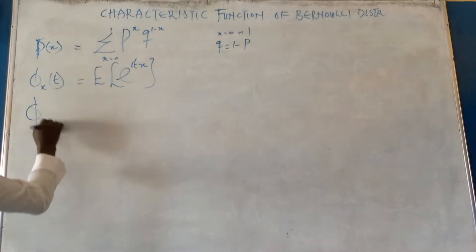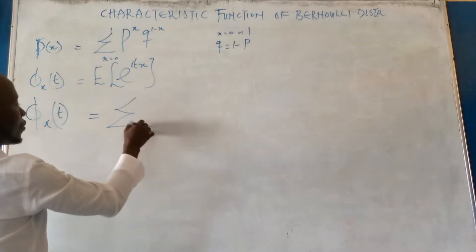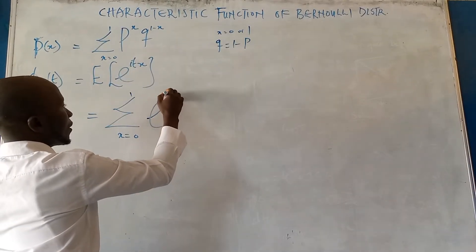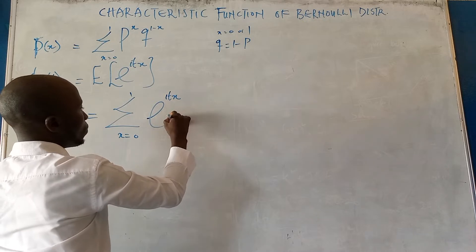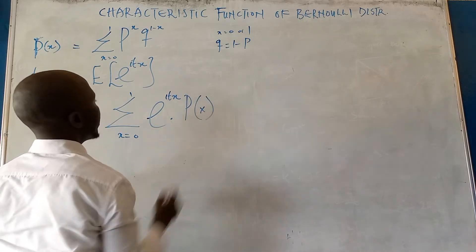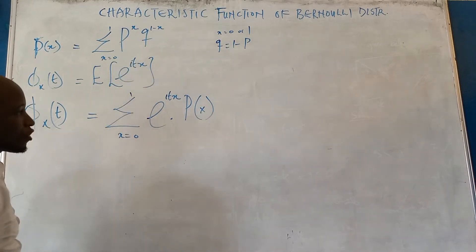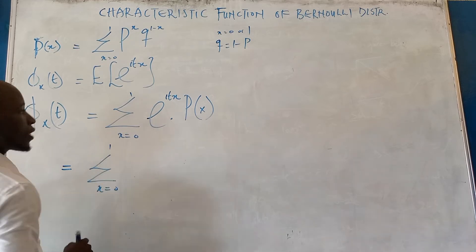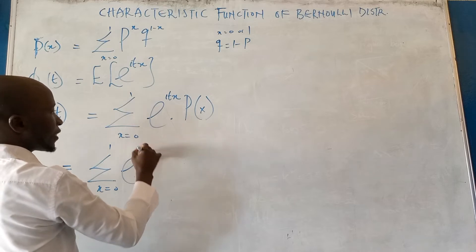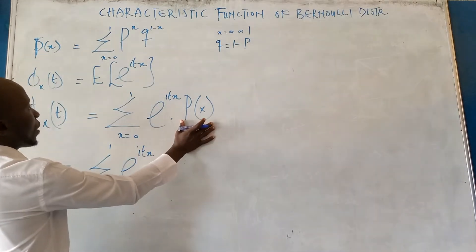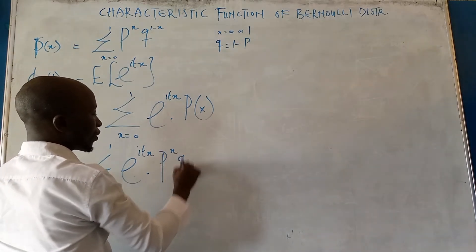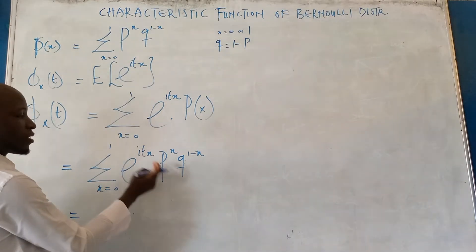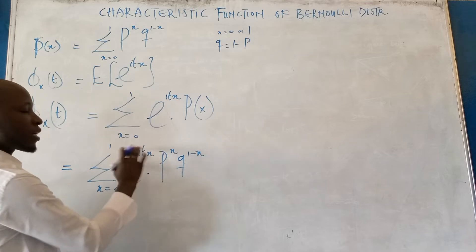Therefore, we are going to have φ_X(t) equals summation where X comes from 0 to 1 of e^(itX) multiplied by the probability mass function of the Bernoulli distribution, which is P raised to power X times Q raised to power 1 minus X. Since we have e^(itX) and P raised to power X, we can join these two together and write P·e^(it) raised to power X.